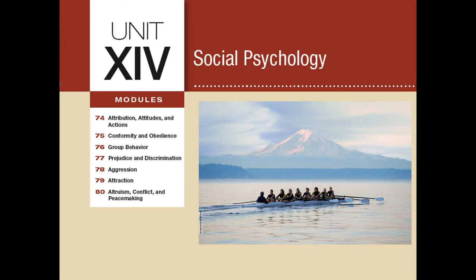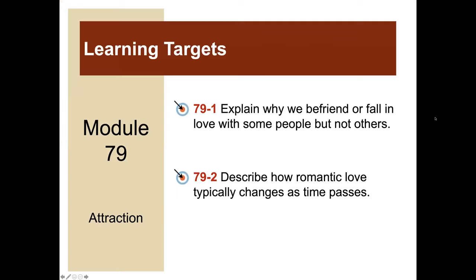Welcome to Unit 14 Social Psychology, Module 79: Attraction. This recording aligns with Myers Psychology for the AP Course, Third Edition textbook. There are two learning targets for this module: explain why we befriend or fall in love with some people but not others, and describe how romantic love typically changes as time passes.